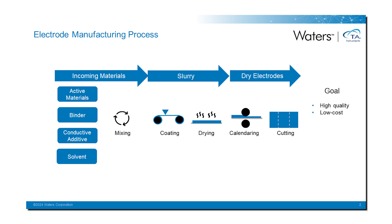The slurry formed is then coated on a metal current collector, then subsequently dried and calendered to produce an electrode with the desired density and porosity. When producing electrodes, the main goals are high uniformity, good adhesion to the current collector, and low cost. Challenges facing slurry production include adequate early-stage characterization of the slurry formulation and the high time and cost associated with the solvent removal process.